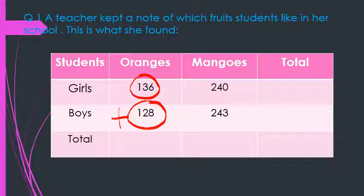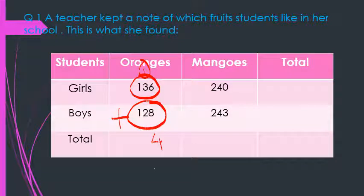6 plus 8 is 14, so 4 we will write here and 1 we carry over. 2 plus 3 is 5, plus 1 is 6. 1 plus 1 is 2. So the total number of students who like oranges are 264.